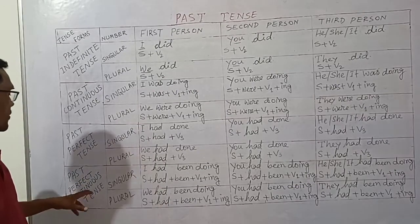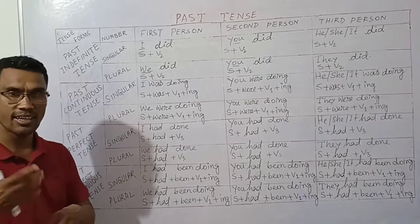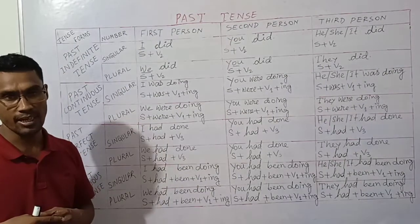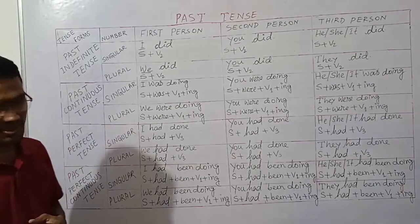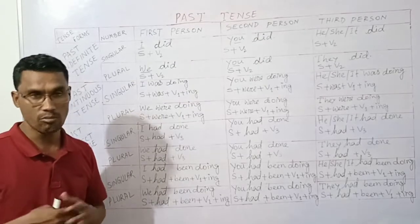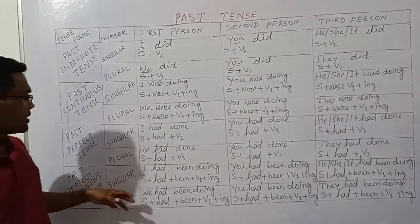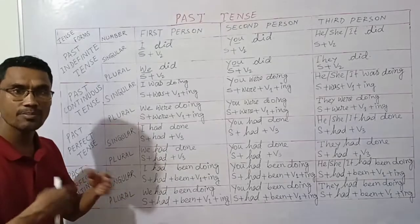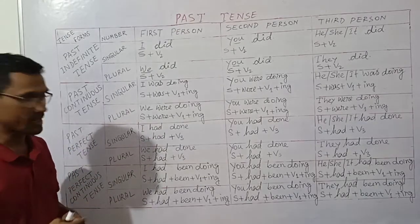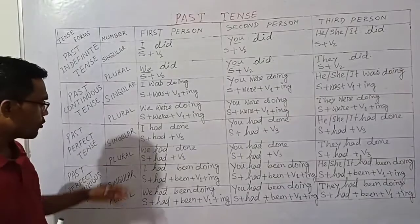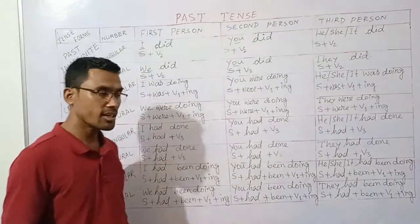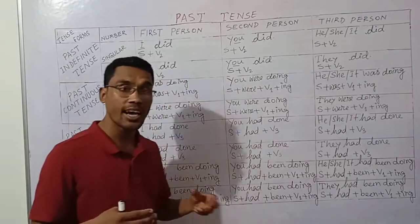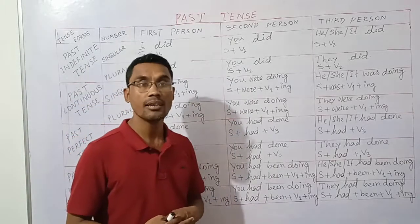For past perfect continuous tense, the structure uses 'had been' plus verb first form plus '-ing.' The sentence: 'I had been doing my homework.' First person plural: 'We had been doing our homework.' The structure is: subject plus 'had' plus 'been' plus verb plus '-ing' plus object.